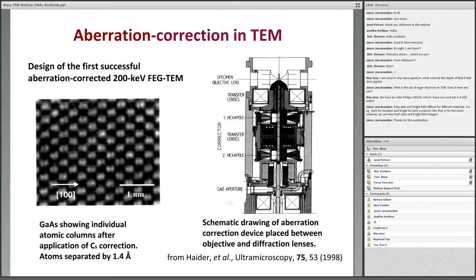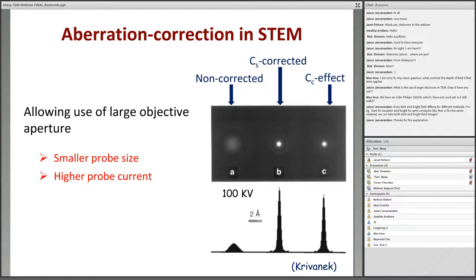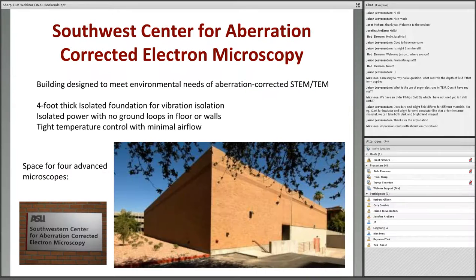Since then, aberration correction has been developed and applied to lots of microscopes. Here's what it does in a scanning TEM. It allows you to make a very finely focused spot that's finer and brighter than what you could do without it. Here on the left, you can see it down here in profile. This is what the spot would look like from a field emission instrument at 100 kilovolts without aberration correction. Here's what it looks like with aberration correction. Much finer and brighter. This allows you to get much higher resolution in scanning microscopes.